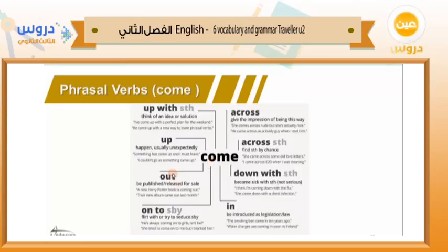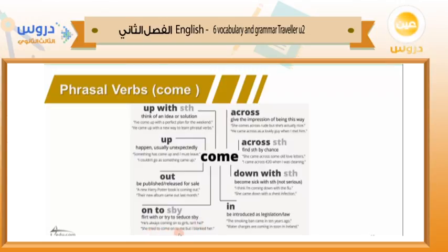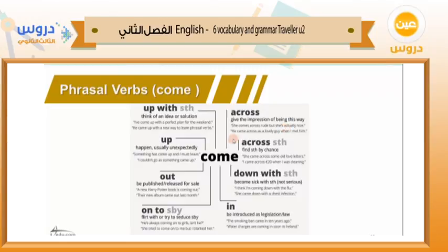'Come out' with the preposition 'out' means to be published or released for sale. For example: 'A new Harry Potter book is coming out.' 'The new album came out last month.' To 'come on to somebody' means to flirt with or try to seduce someone. For example: 'He's always coming on to girls.' 'Come across' means to give the impression of being a certain way. For example: 'She comes across as rude but she's actually nice.' 'He came across as a lovely guy when I met him.'